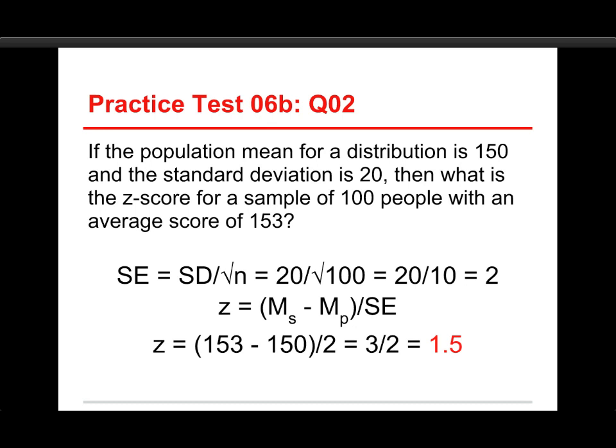Then we plug that into the formula for z-scores: m-sub-s, the mean of the sample, minus m-sub-p, the mean of the population, divided by the standard error. So we put in 153 minus 150, divided by 2, which equals 3 divided by 2, equal to 1.5. This means the sample is 1.5 standard errors above the population mean.